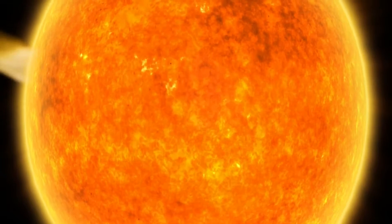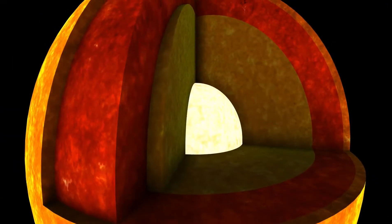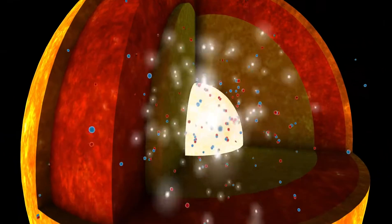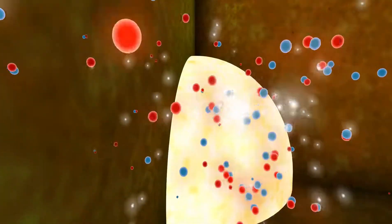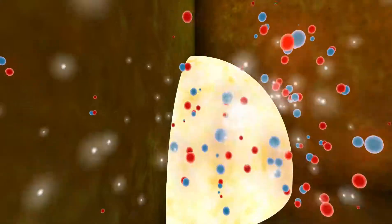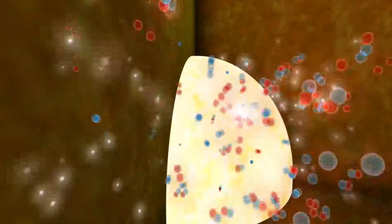Neutrinos also appear when atoms fuse together, like in the sun. Every second, nearly a billion tons of hydrogen smash and stick together, making helium and energy and neutrinos.